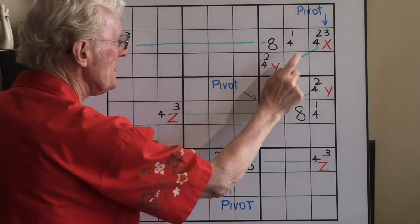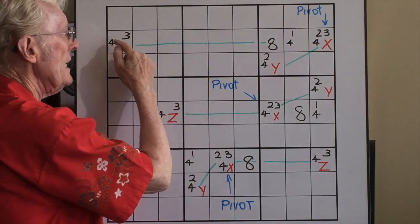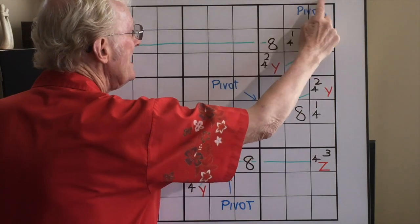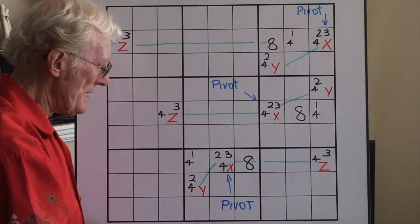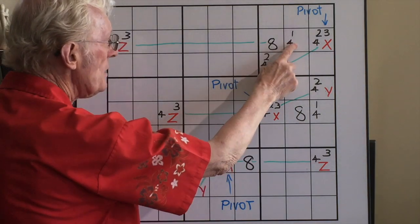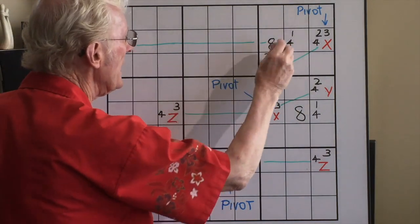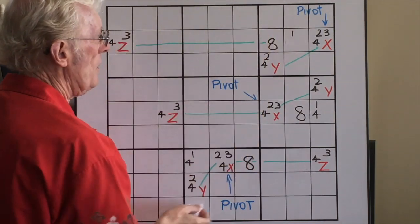And the key here is to look for, because four is the common number, is there a four in this row, in this block, that's not part of the X, Y, Z wing? Yes, there is. And it's this one here, so we can eliminate that four. And you're left with a one.